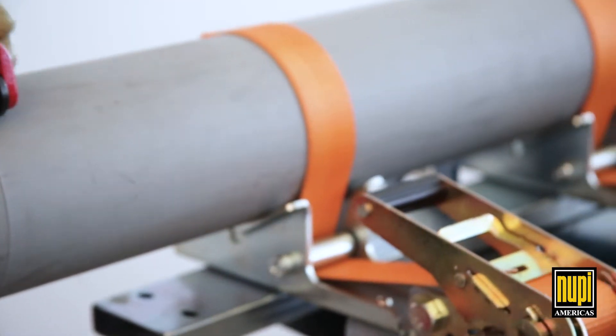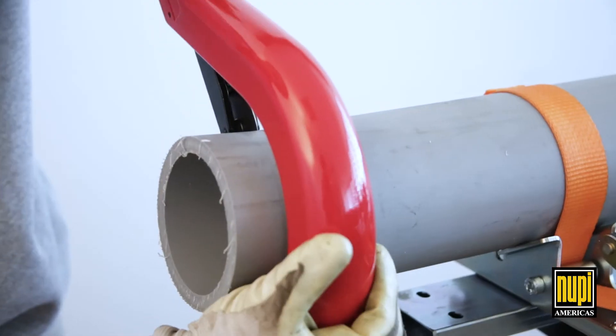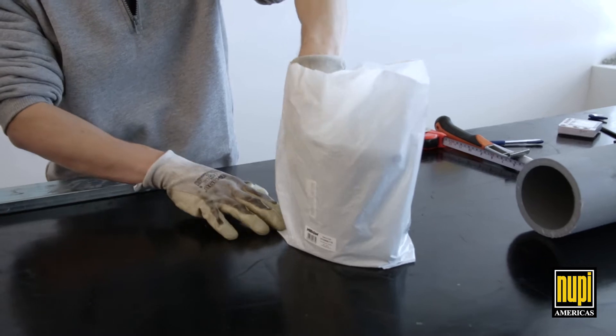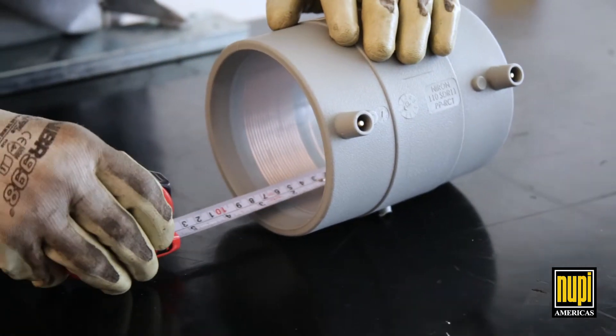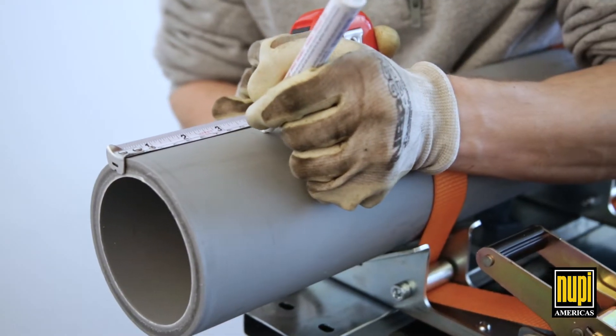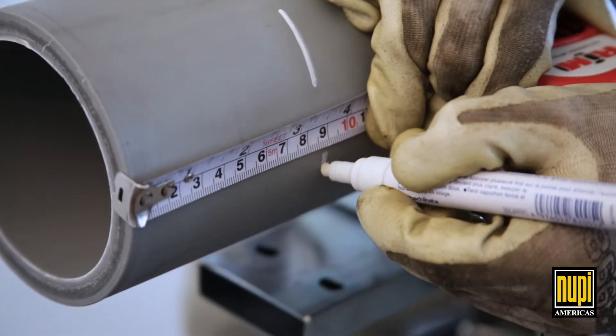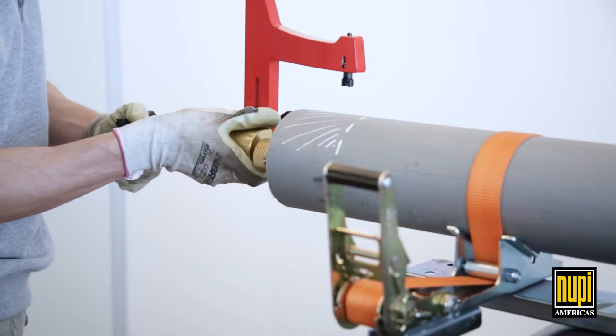Cut the pipes at right angles with a pipe cutter. Scrape the pipe and the fitting spigot surface uniformly to completely remove any oxidized layer. Scrape at least 3 eighths of an inch beyond the insertion length of the fitting.